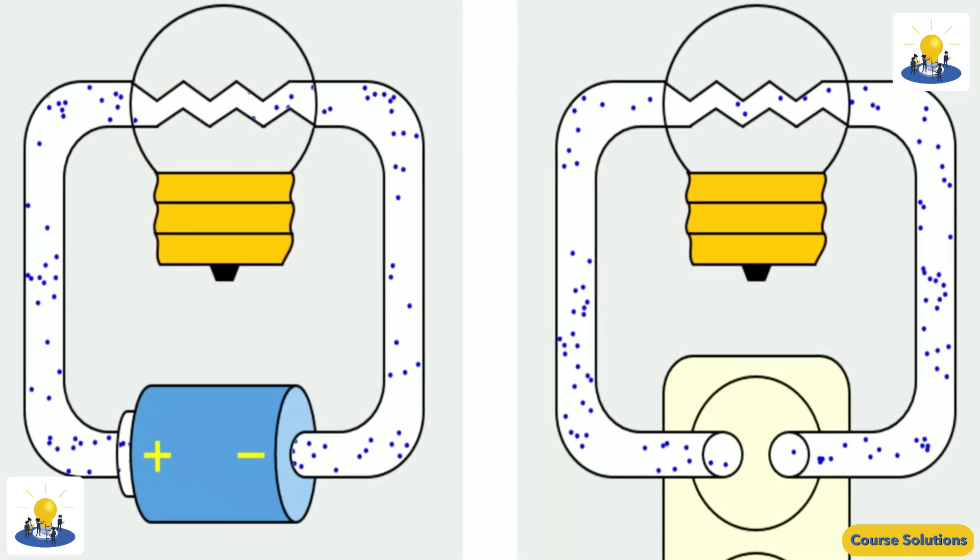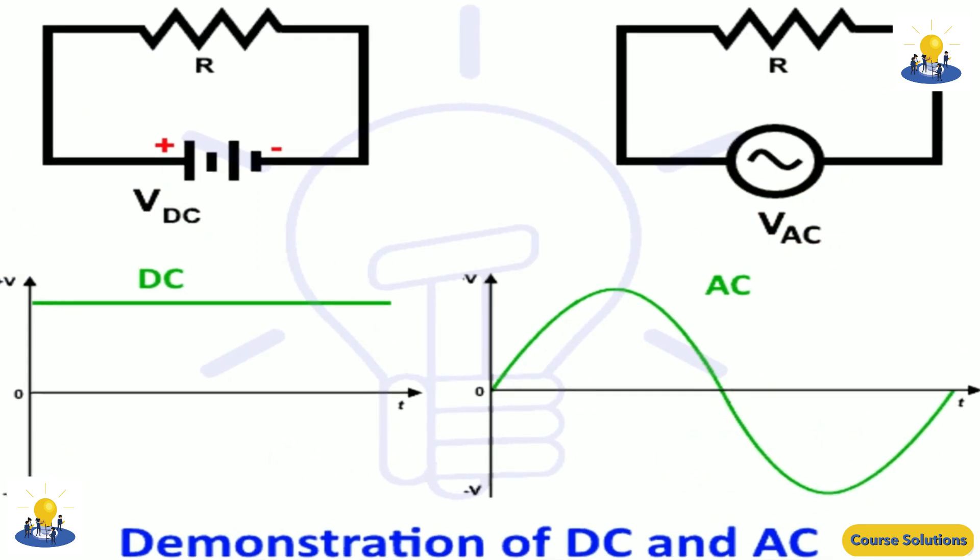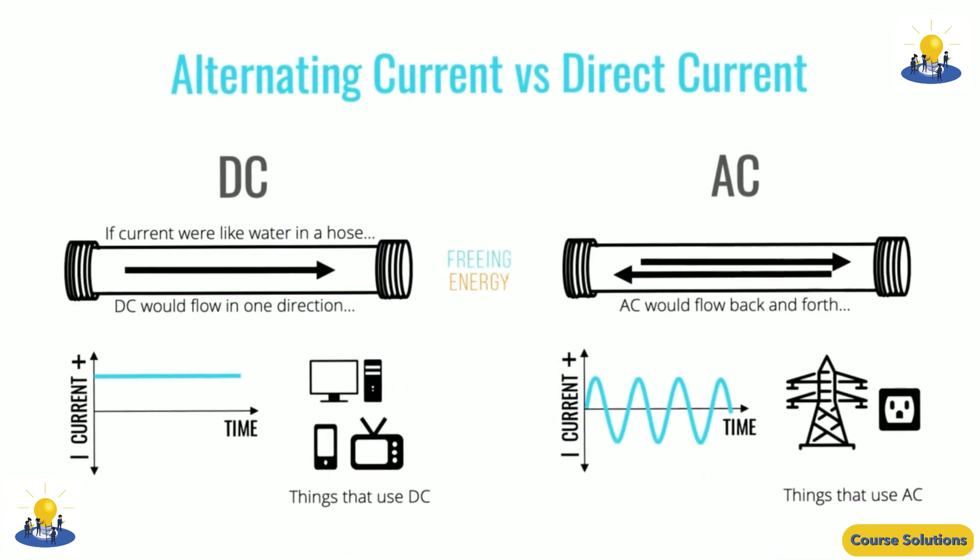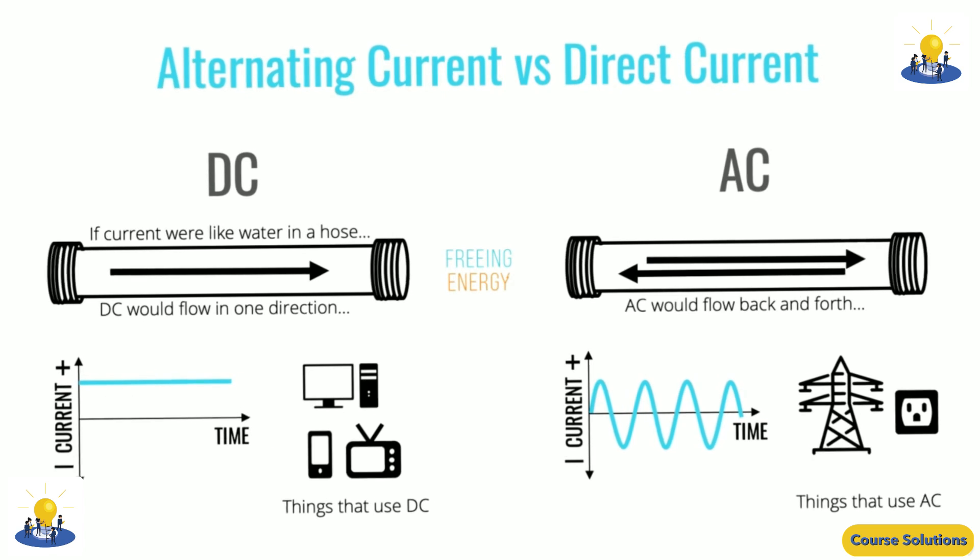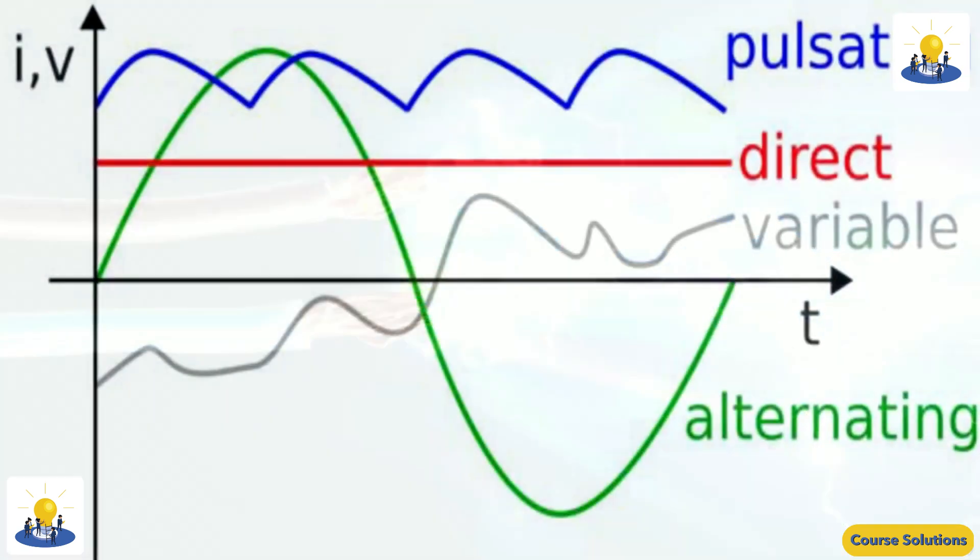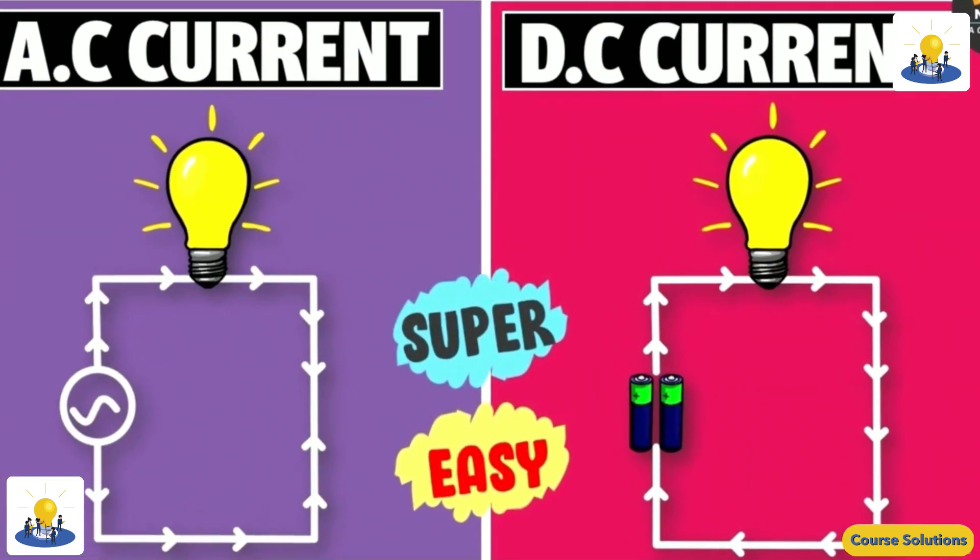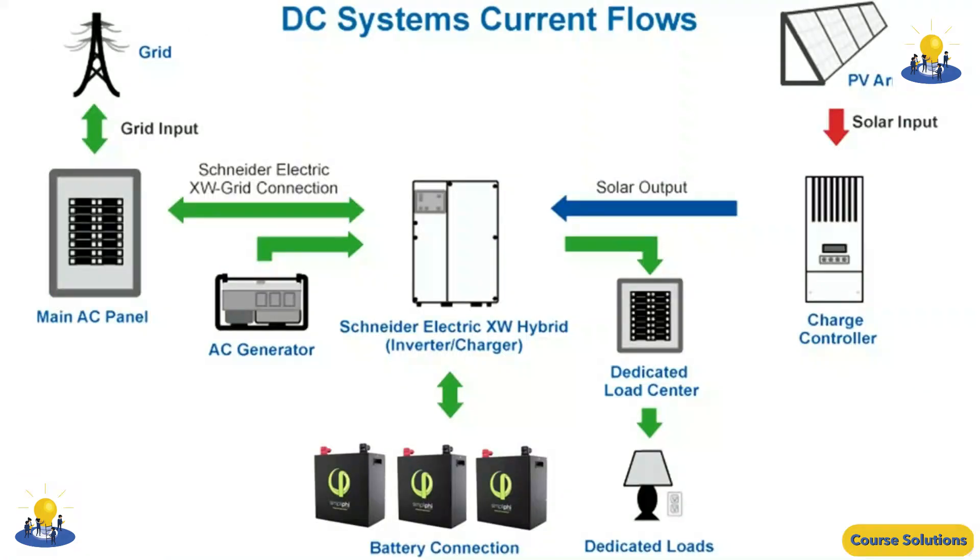Alternating current (AC) has the distinct advantage over direct current (DC), a steady flow of electric charge in one direction, of being able to transmit power over large distances without great loss of energy to resistance. The power transmitted is equal to the current times the voltage. However, the power lost is equal to the resistance times the square of the current.